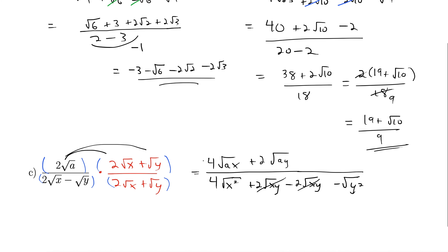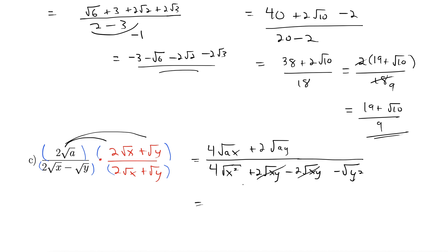We can't simplify the numerator, so let's just rewrite it. 4 rad a x plus 2 rad a y. Then in the denominator, let's see, square root of x squared is x. Remember, these variables are assumed to be positive, so we don't need the absolute value. 4x minus and then square root of y squared is y. And there is no further cancelling that we can do on that one.